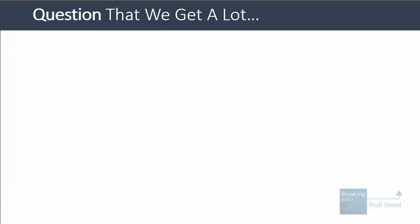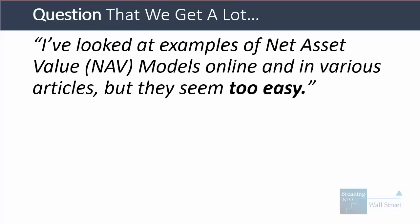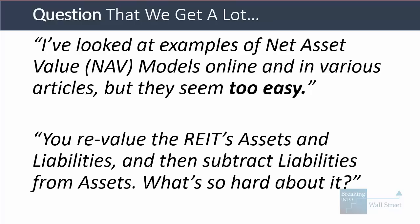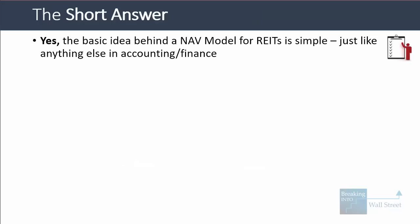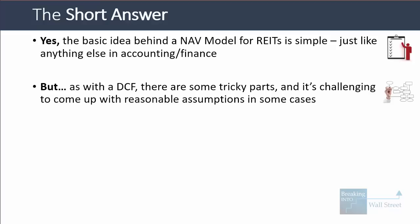Here's the question that we often get about this model: I've looked at examples of net asset value models online and in various articles, but they seem too easy. You revalue the REIT's assets and liabilities, and then you subtract the REIT's liabilities from its assets, and that's the REIT's net asset value. What is so hard about this model? The short answer is that the basic idea is pretty simple, just like anything else in accounting and finance. The difficulty lies in the execution.